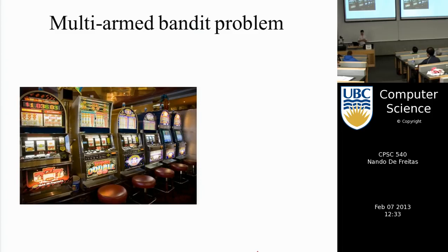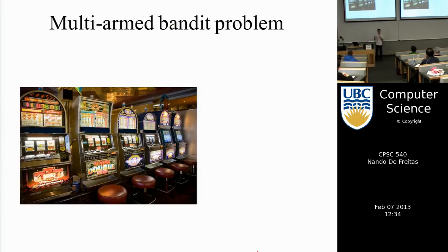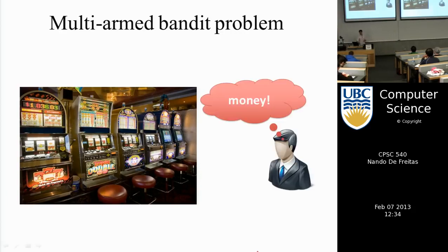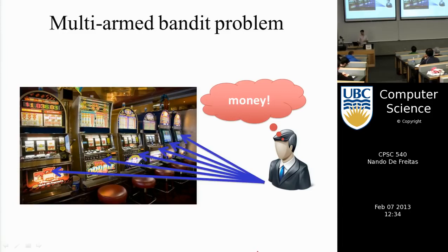The problem we will deal with is known in some areas as the multi-armed bandit problem. Bandits are machines you find in a casino, and when you enter, your job is to decide which machine to try — which one is likely to give you the most money.